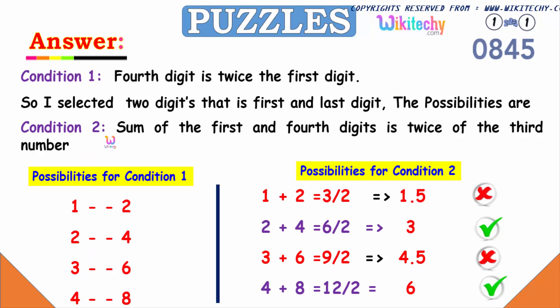And condition two is the sum of the first and fourth digit is twice of the third number. So one plus two, that's three divided by two, it's one point five. It can't be one point five. The third digit can't be one point five. Two plus four, it's six divided by two, it can be three. The third digit can be three.